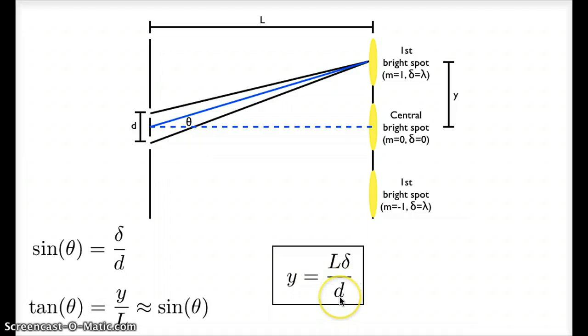So it involves the distance between the slits, the distance from the slits to the screen, and the path length difference at whatever point on the screen I'm looking at, and this will tell me why. y here is the distance from the center of the screen up to whatever point of interest I'm looking for.